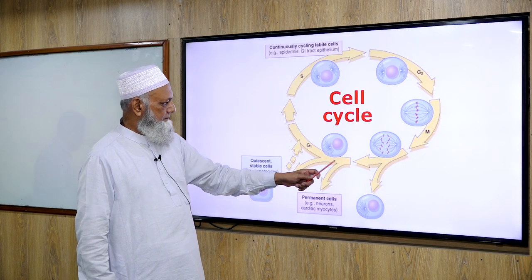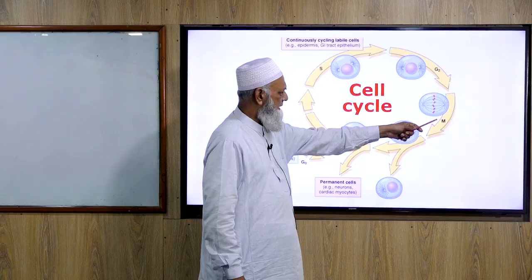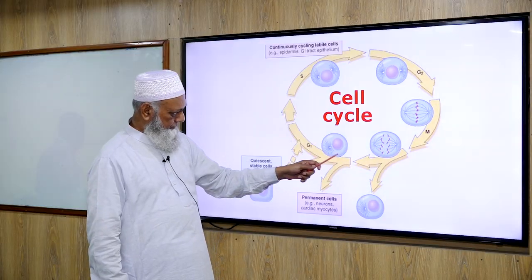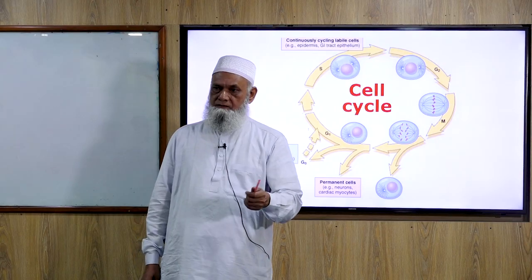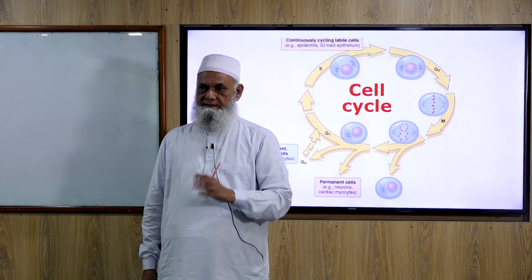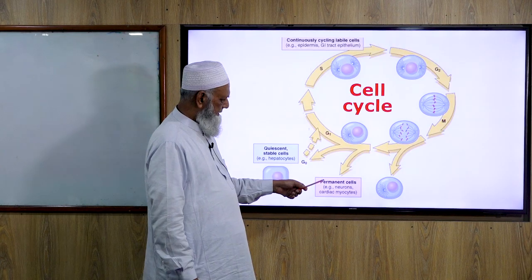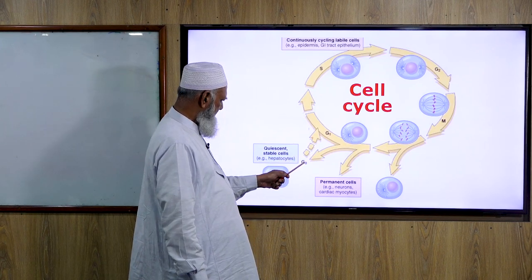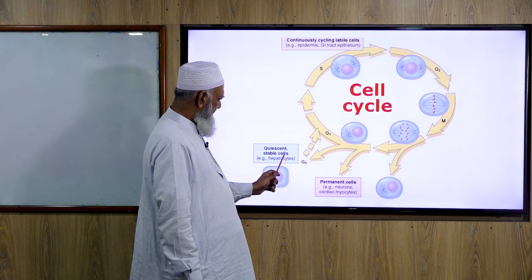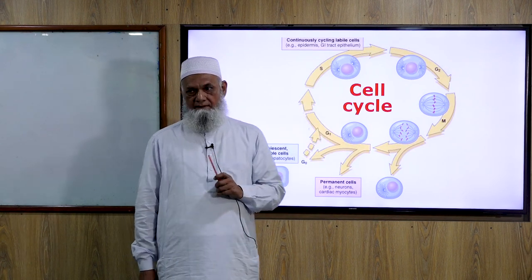The cell starts from G1, then S, then G2 to M phase, then divides into two cells. Some cells escape from the cell cycle and never return — these are called permanent cells. Some cells go to G0 stage; these are stable cells that re-enter the cell cycle and proliferate when needed.